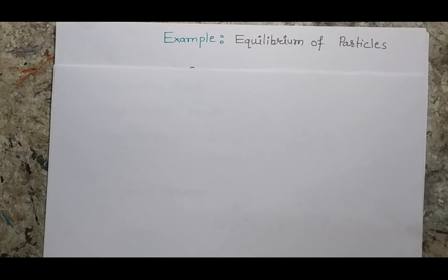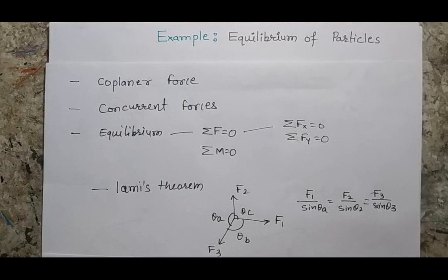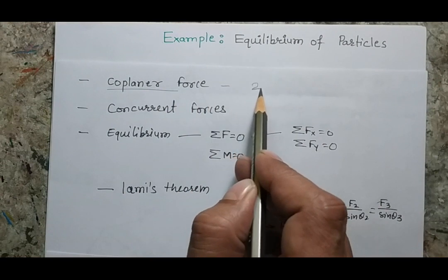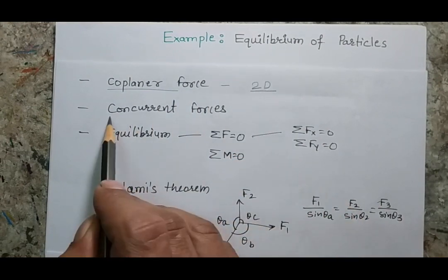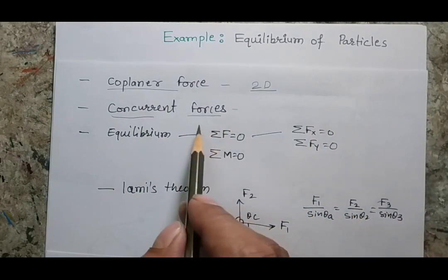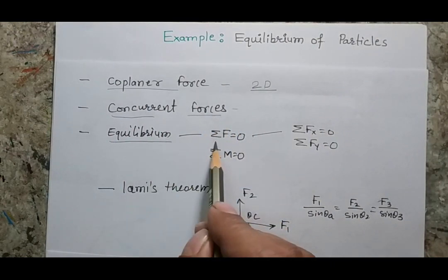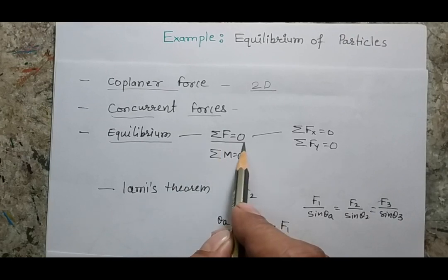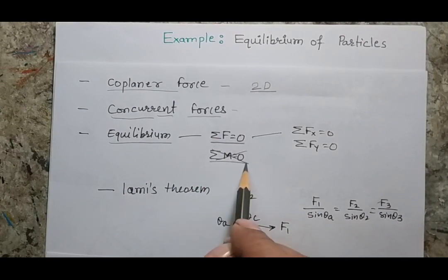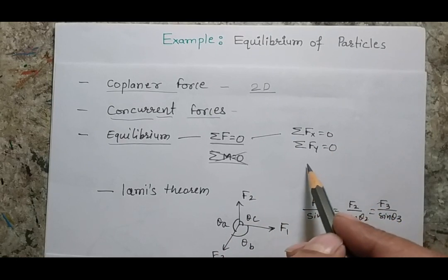We are going to deal with coplanar forces, meaning our problems will be defined in two dimensions. When the system is of concurrent forces, we write the equilibrium by balancing the forces. For a concurrent force system, the moment balance equation is not required — we only write equations for balancing horizontal forces and vertical forces.